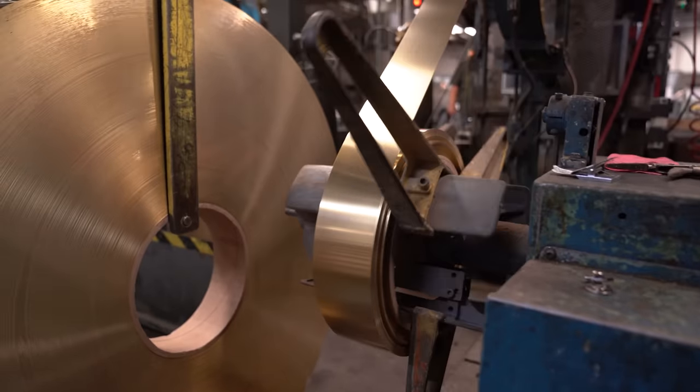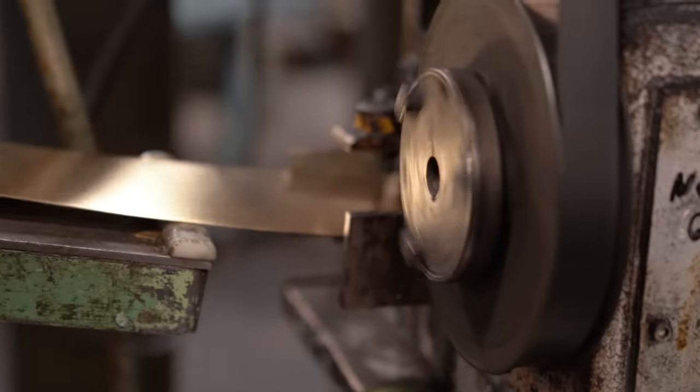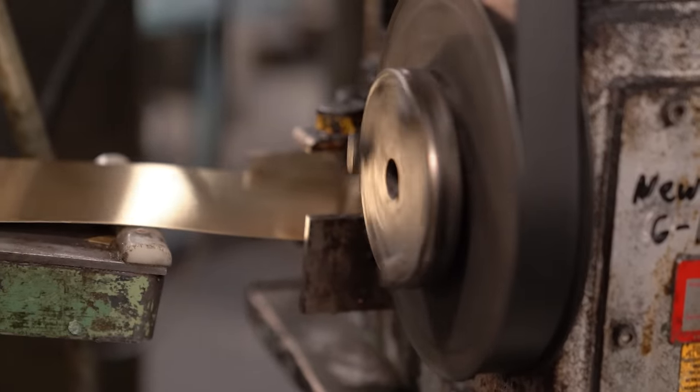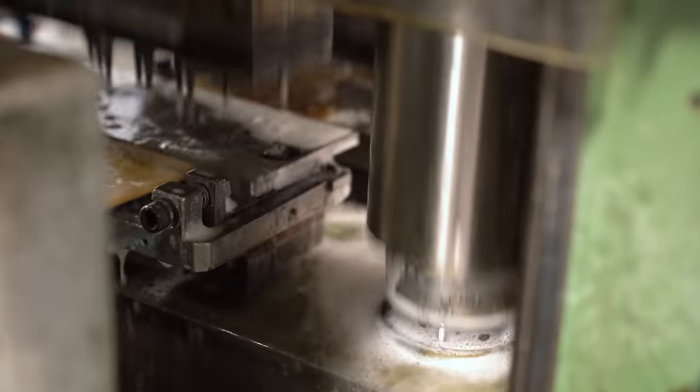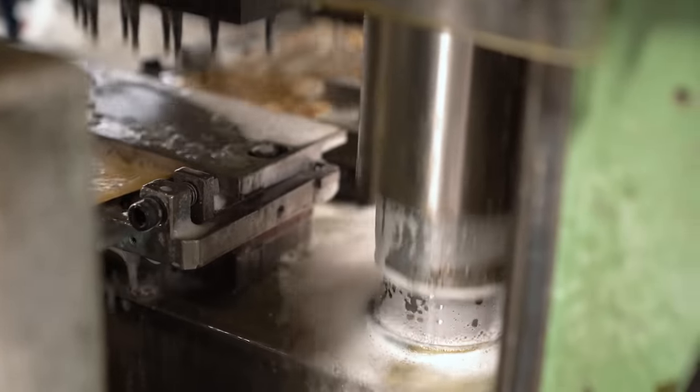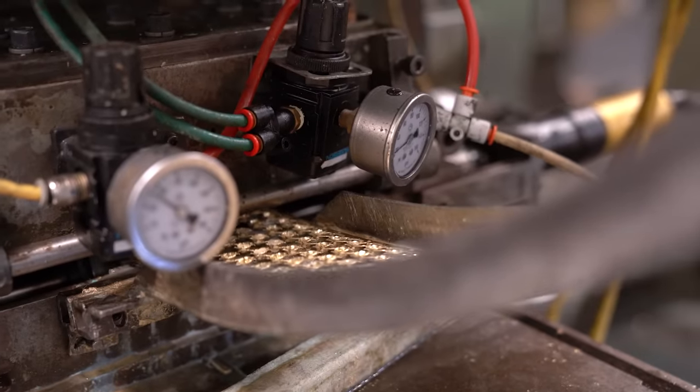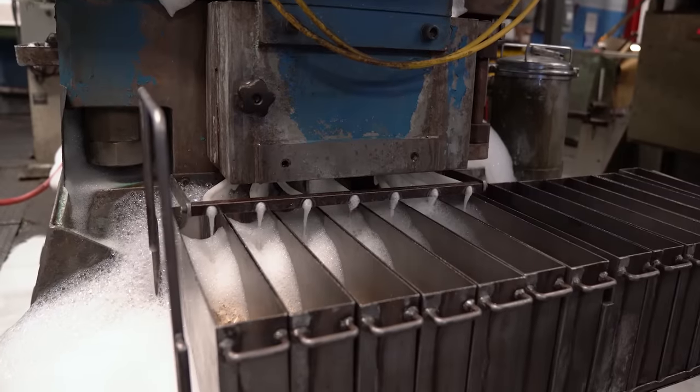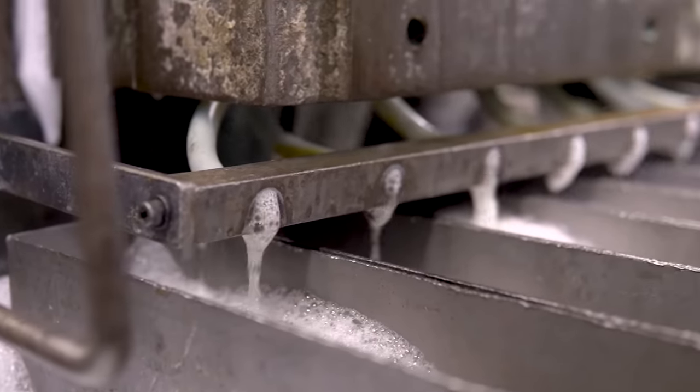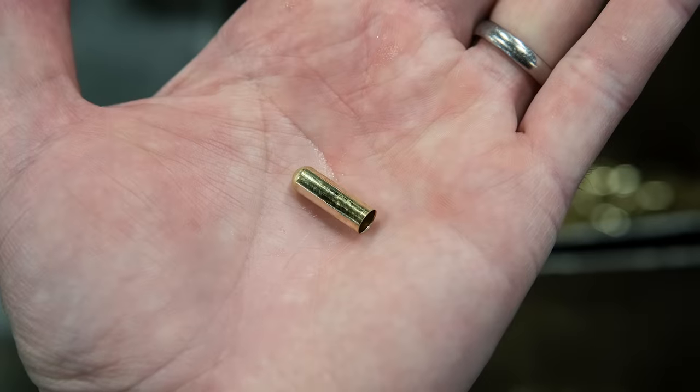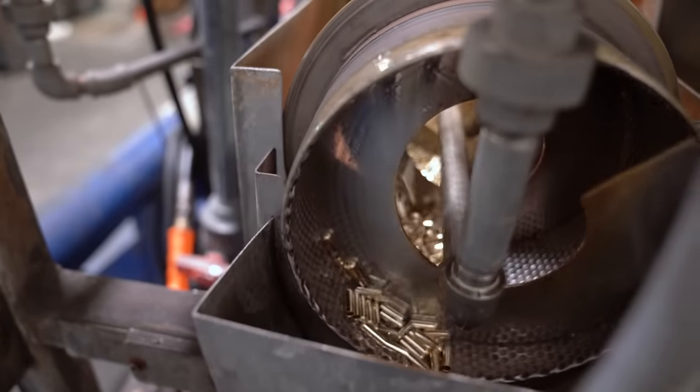The cartridge case starts out with a roll of brass strip. Round pieces are stamped out of the strip and gradually drawn out into a brass cup. The cups are heat treated and then washed and dried.